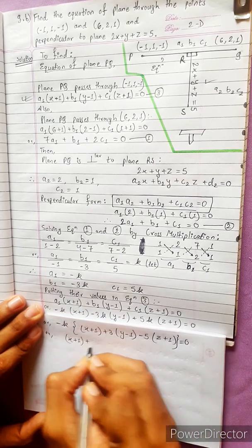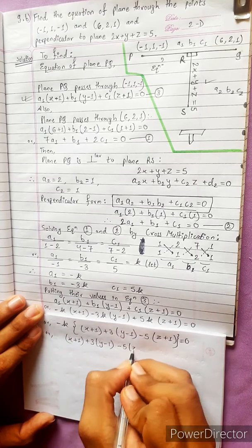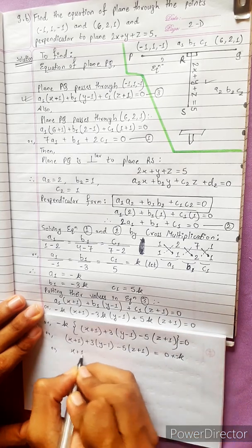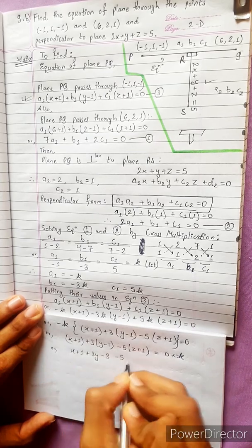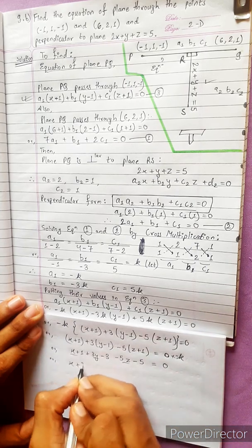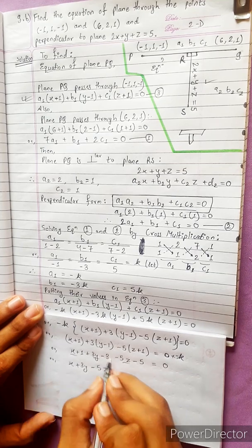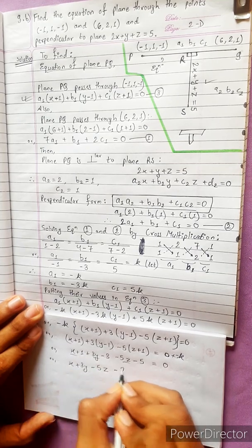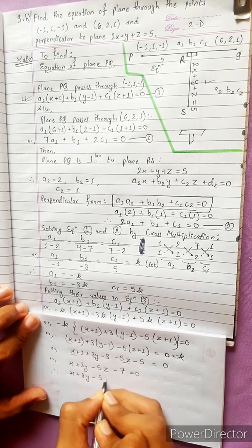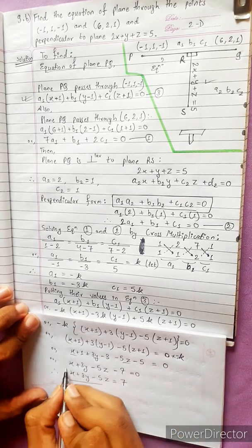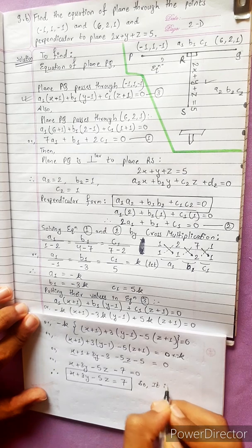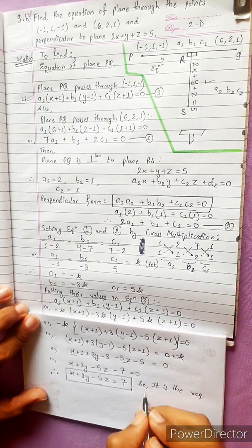Expanding: x plus 1 plus 3y minus 3 minus 5z minus 5 equals zero, which simplifies to x plus 3y minus 5z plus 3 minus 5 minus 1 equals zero, giving x plus 3y minus 5z minus 7 equals zero, or x plus 3y minus 5z equals 7. This is the required equation of the plane.